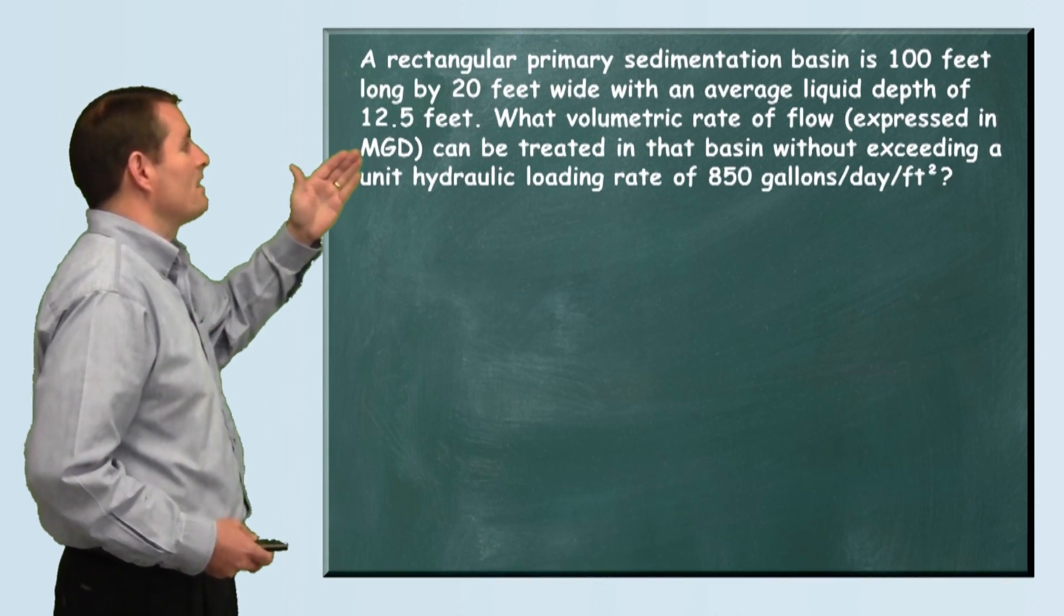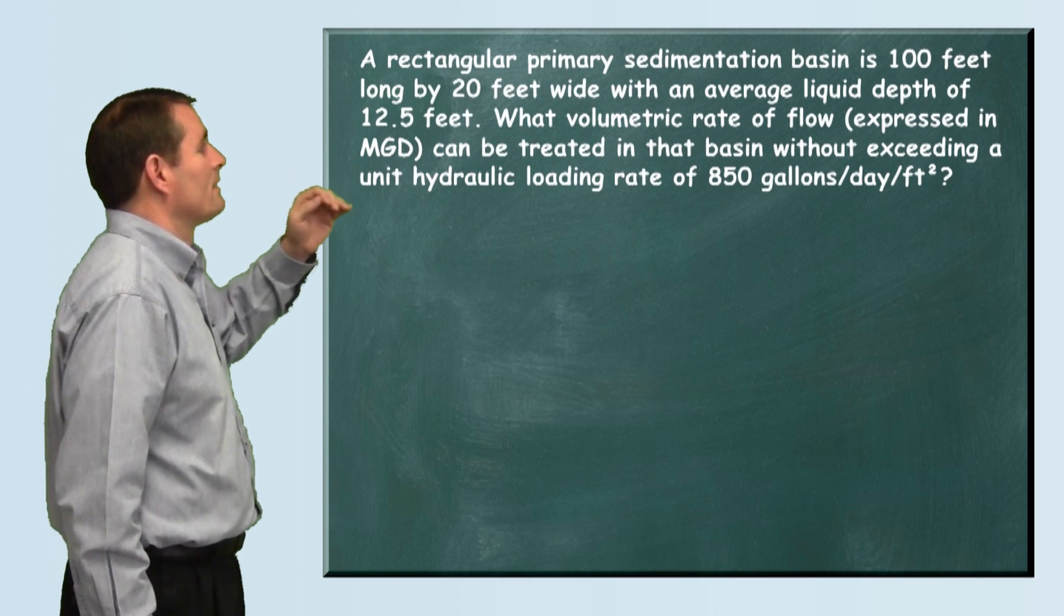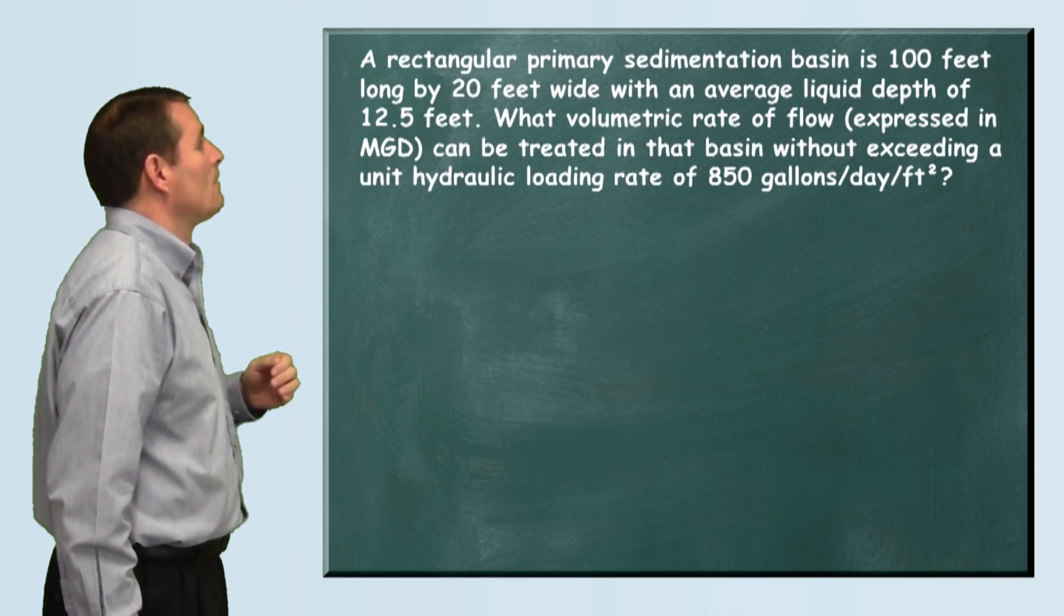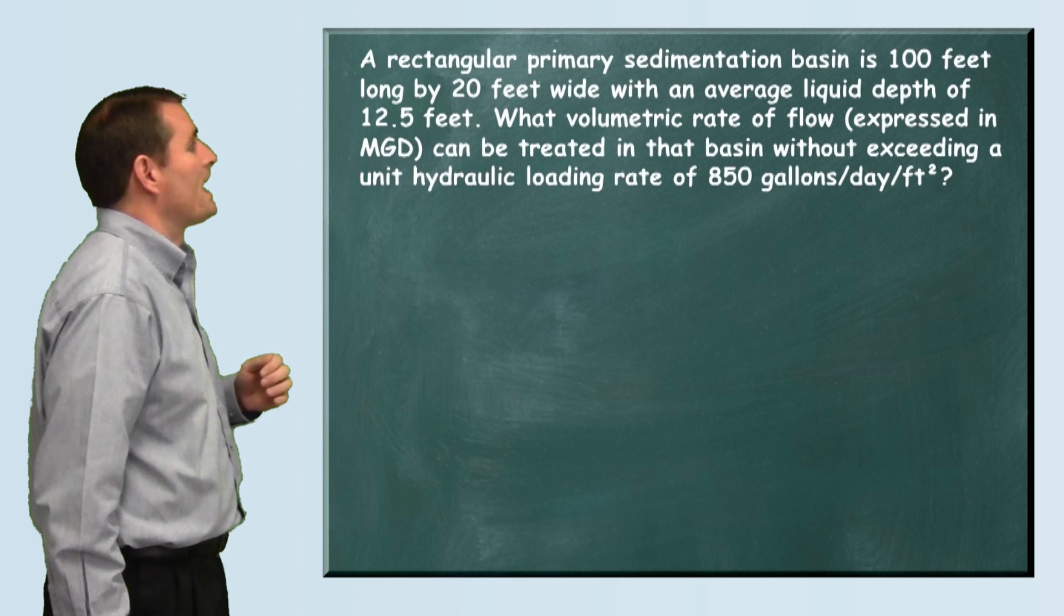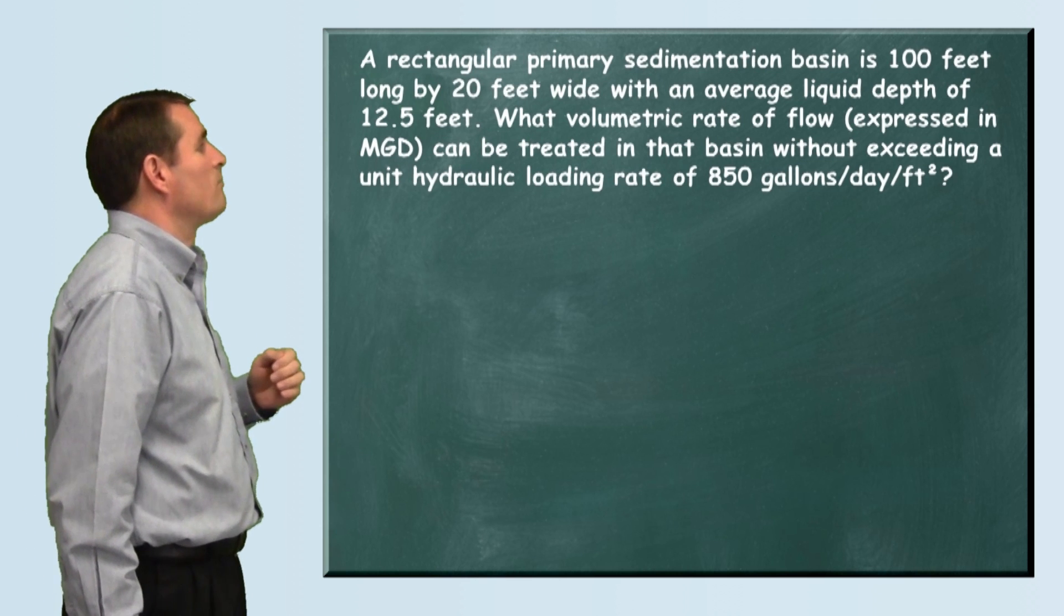The problem reads: a rectangular primary sedimentation basin is 100 feet long by 20 feet wide with an average liquid depth of 12.5 feet.